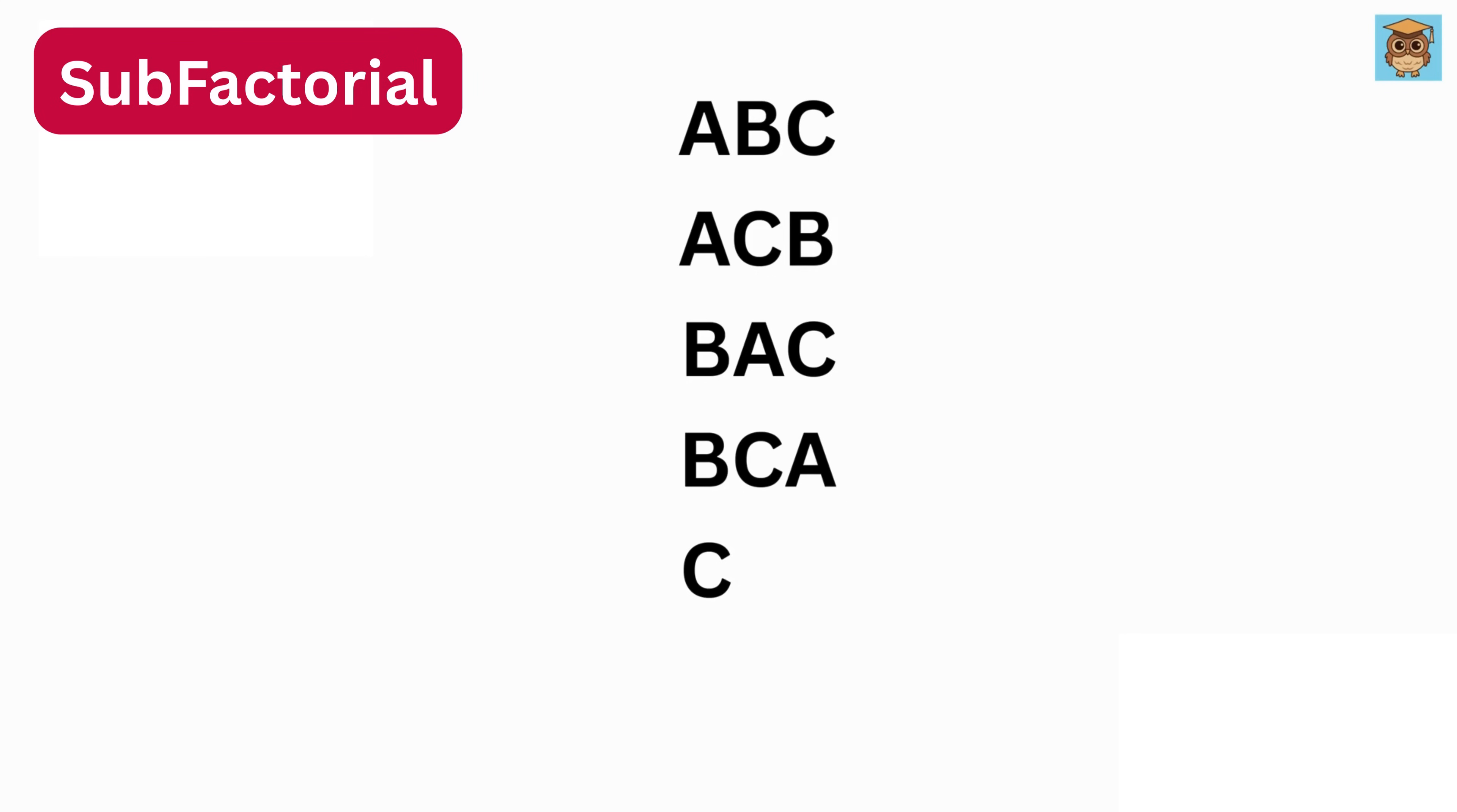Finally, let's fix C at the beginning and arrange the rest. That gives us C and A and B, and finally C, B, and A. So in total, we have six different arrangements of these three letters.